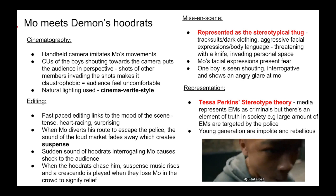When Mo collects Rash's weed, he meets some of Demon's hoodrats, which is the rival gang of DMG. The cinematography is handheld to imitate Mo's movements, and there are close-ups of the boys shouting towards the camera, which puts the audience in perspective. Shots of other members invading the frame make it claustrophobic and make the audience feel uncomfortable. There is also natural lighting used. The editing is fast-paced to link to the mood of the scene and to Mo's reactions of shock and surprise. When Mo diverts his route to escape the police, the sound of the loud market fades away, which creates suspense.